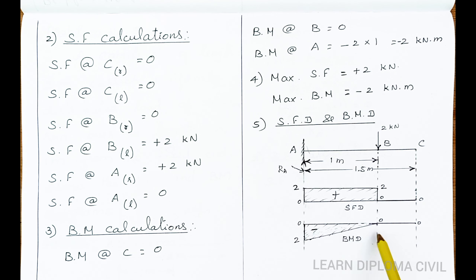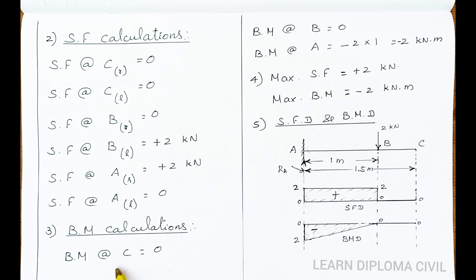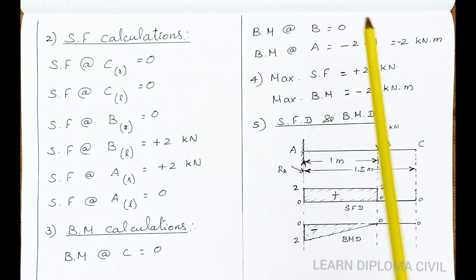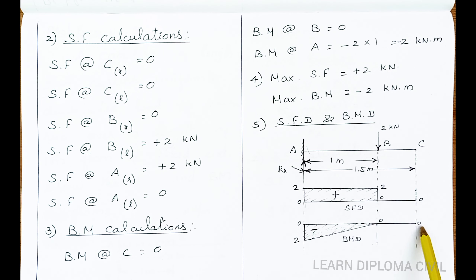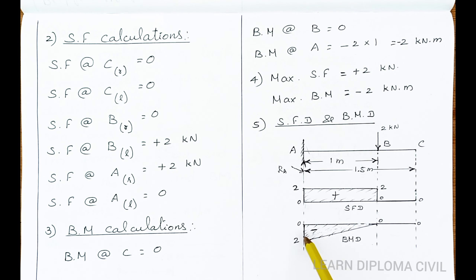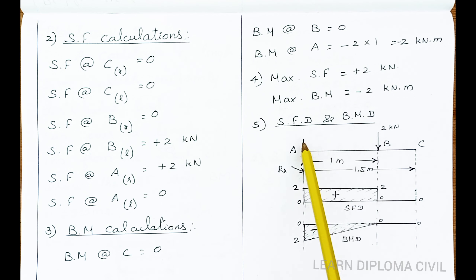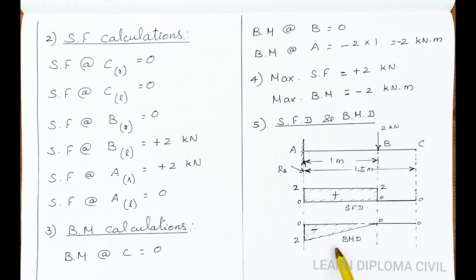Now for the bending moment diagram, draw a horizontal 0 bending moment baseline. Bending moment at C is 0, bending moment at B is 0. Bending moment at A is minus 2 kNm. Mark 2 on the baseline below — B point is 0 and A point is 2. The bending moment diagram is an inclined straight line from B to A, giving a minus 2 kNm mark. This completes the bending moment diagram for problem 4.